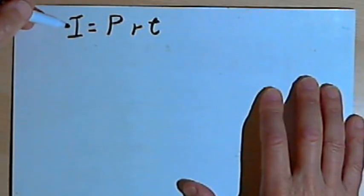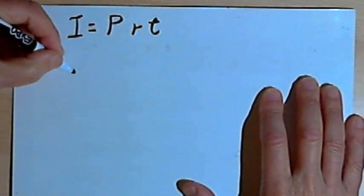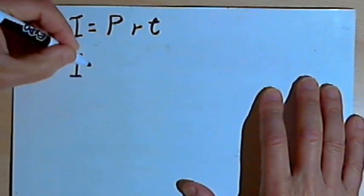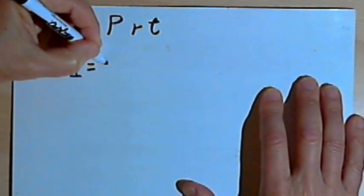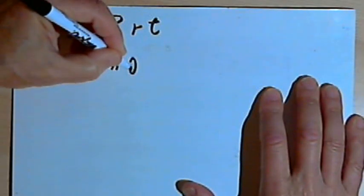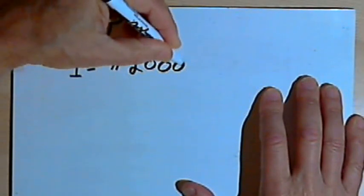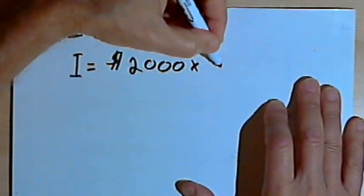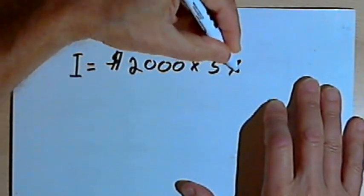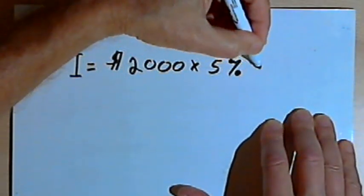So let's try a specific example. Let's say I want to find the interest, I, if I invest as my principal $2000 at 5% for a period of 3 years.